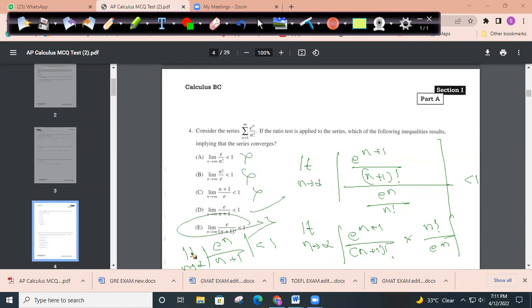So D for Delhi should be my answer. Limit n tends to infinity e by n+1 should be less than 1. So D is my answer. Under this condition, the given series converges.